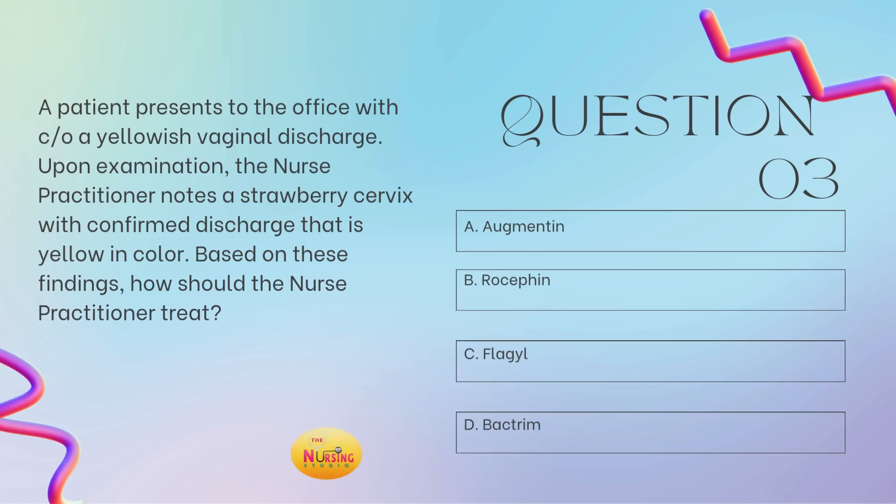Question number three. A patient presents to the office with complaints of a yellowish vaginal discharge. Upon examination, the nurse practitioner notes a strawberry cervix with confirmed discharge that is yellow in color. Based on these findings, how should the nurse practitioner treat? Is it A, Augmentin; B, Rocephin; C, Flagyl; or D, Bactrim? Take a moment and tell me what you got.